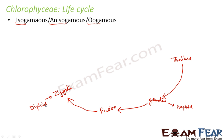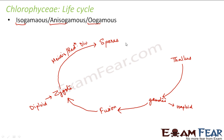The gametes are haploid cells, so two haploid cells fuse to form a zygote, which is a diploid cell. Haploid means one set of chromosomes; diploid means two sets. The zygote then undergoes meiosis — the reduction division — and gives rise to spores. These spores germinate under favorable conditions to form the thallus again.